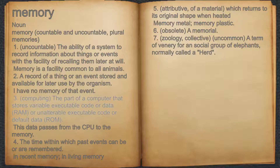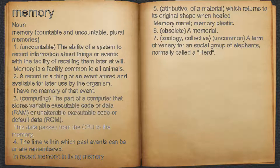3. Computing, the part of a computer that stores variable executable code or data, RAM, or unalterable executable code or default data, ROM. For example, this data passes from the CPU to the memory.